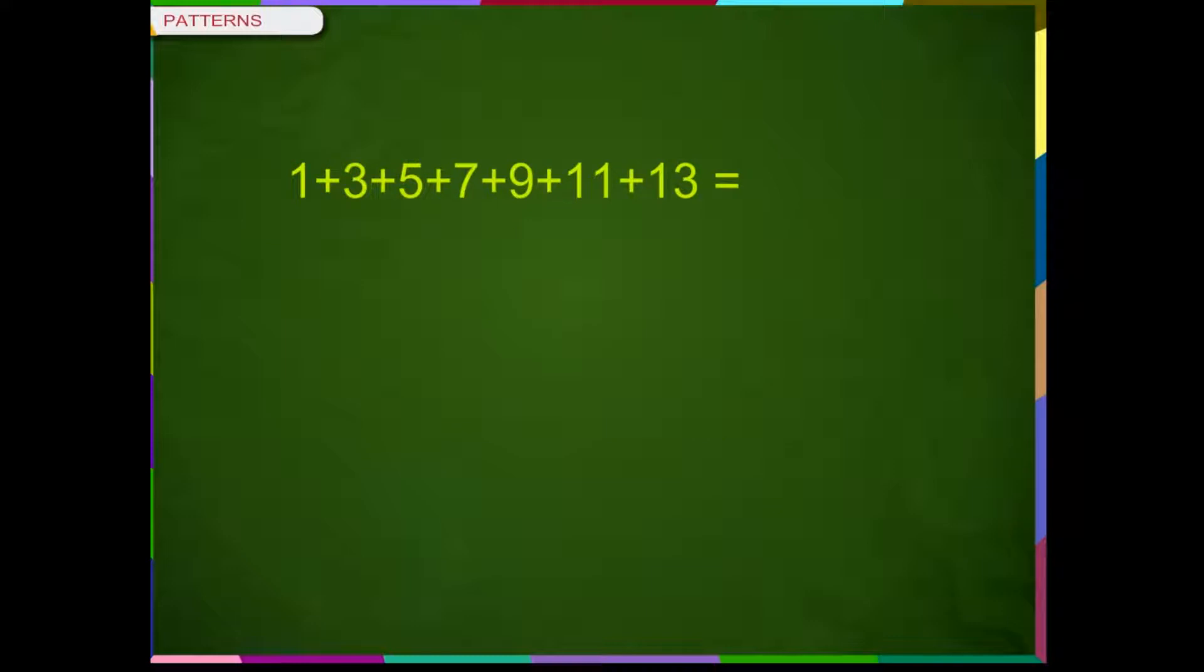Observe the pattern and write the next number in the pattern. In this pattern, there are 7 consecutive odd numbers, so the sum will be 7 into 7, which is equal to 49.